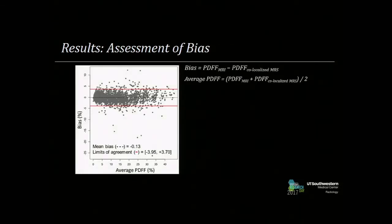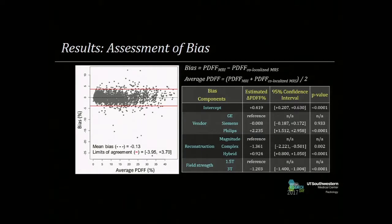Looking at bias, this Bland-Altman plot shows a mean bias of negative 0.13 — near zero — and limits of agreement within 4%. Examining potential contributors to bias using a linear regression with mixed model effect, the maximum potential contributor is about 2% for vendor. Although statistically significant, 1–2% within PDFF is actually pretty good in clinical practice.